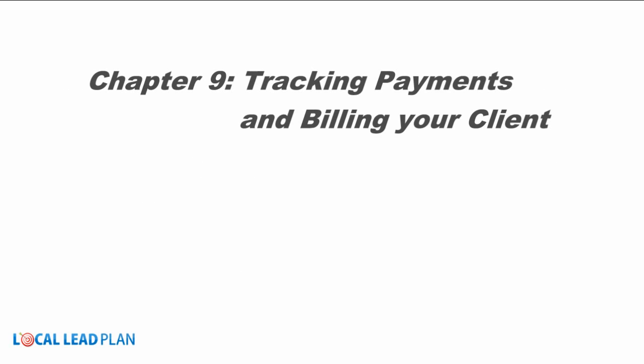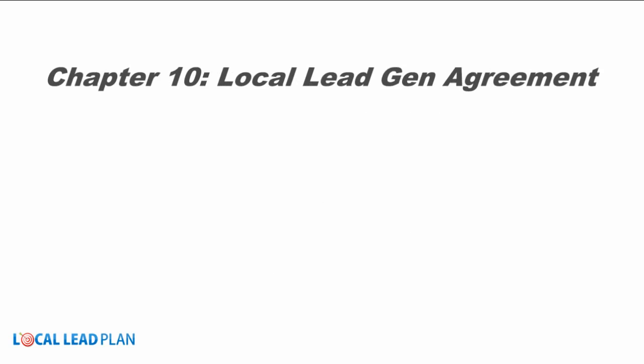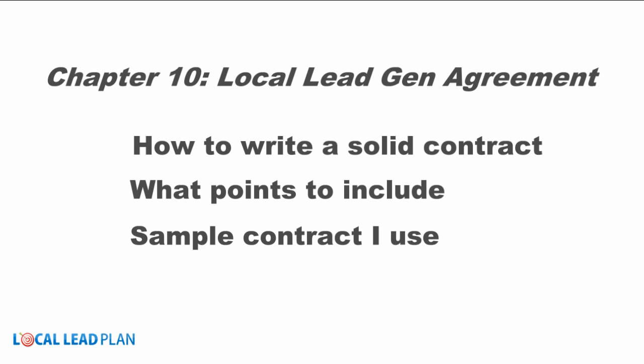Chapter nine is about tracking your payments and billing your clients — after all, you have to get paid. I go over tracking commissions, how to set up payment terms, run reports, how to invoice your customers, and I'll show you all the great free programs that do this stuff. Chapter ten is about the all-important local lead generation agreement — this is how you write a contract that's going to protect both you and your client from any problems down the road. You should never start working without one of these contracts in place.